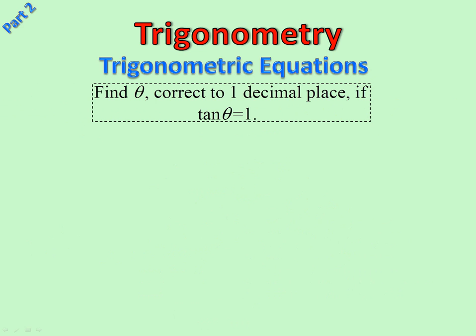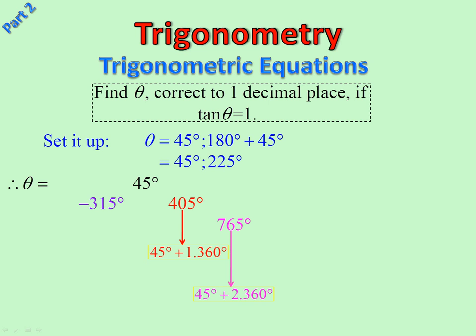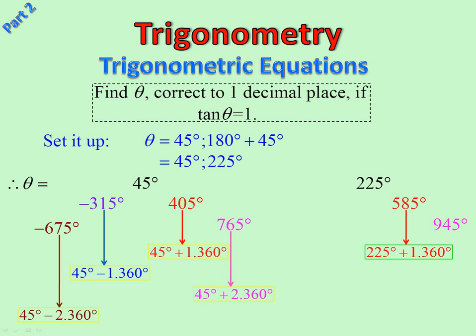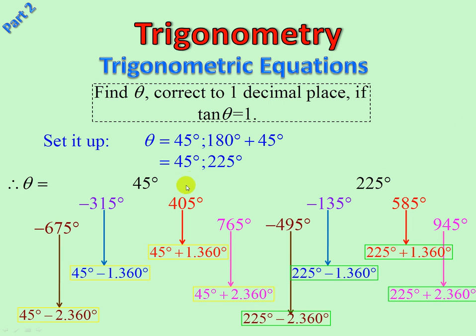Let's go on to another one now. Notice, no domain, so we must solve for everything. So we set it up, tan positive, first and third. Key angle, 45 degrees, there are answers. Now we haven't finished yet because we've been told that we have to solve for tan theta equals 1 and there are other angles where tan theta is equal to 1 as well. So let's have a look at 45. There we are. Add 360, add another 360, take off 360, take off another 360.